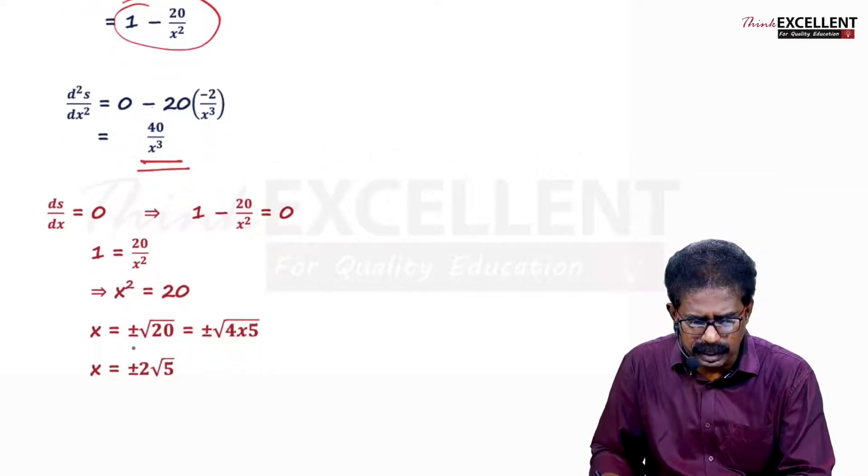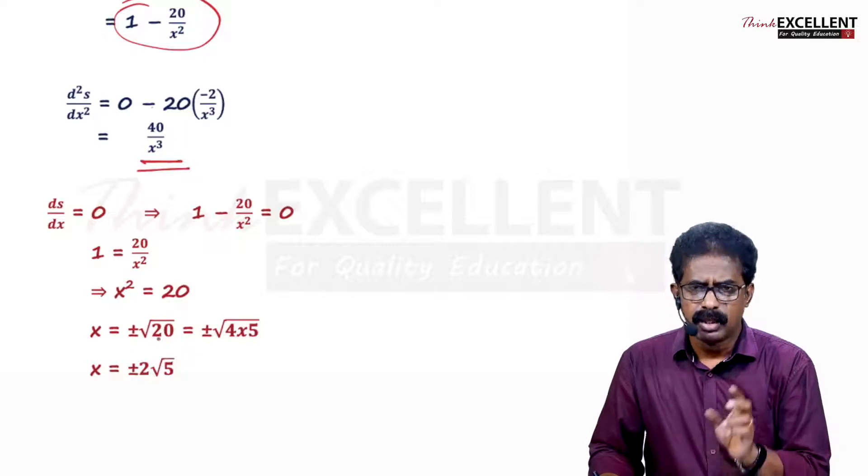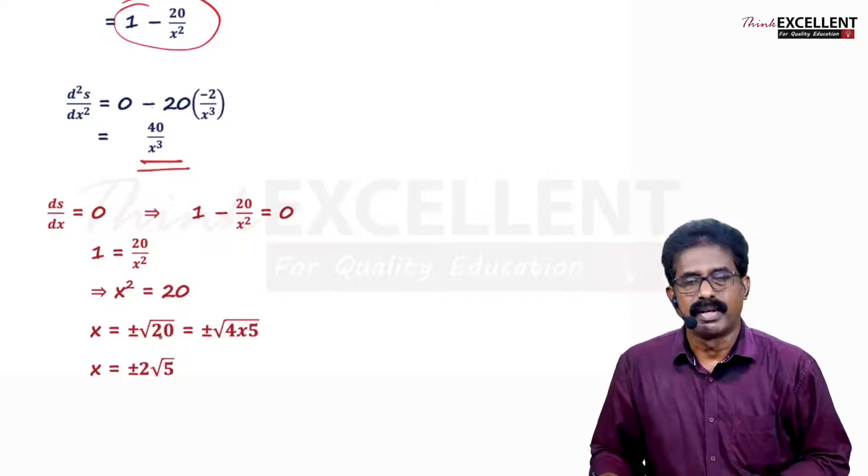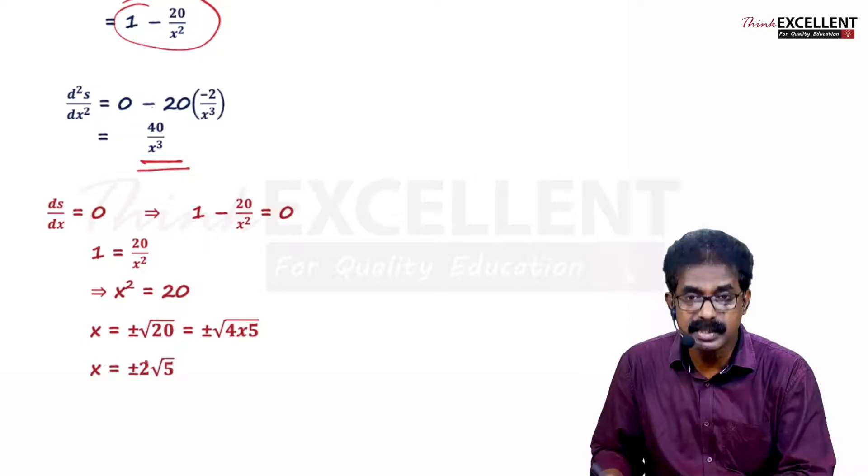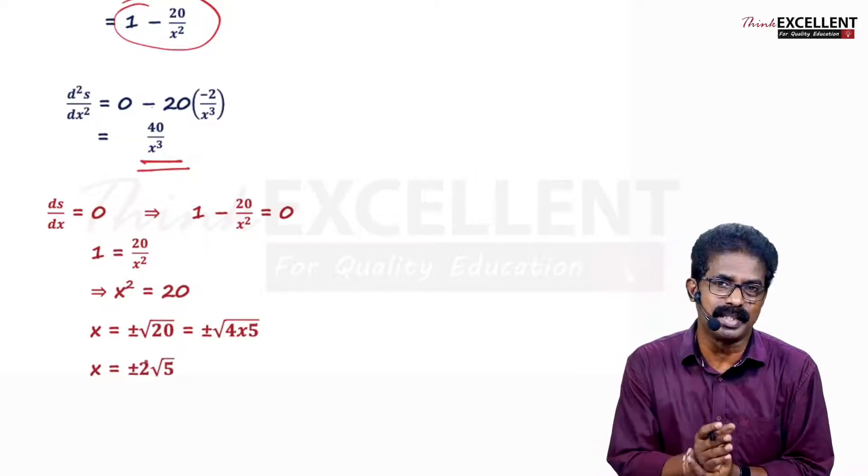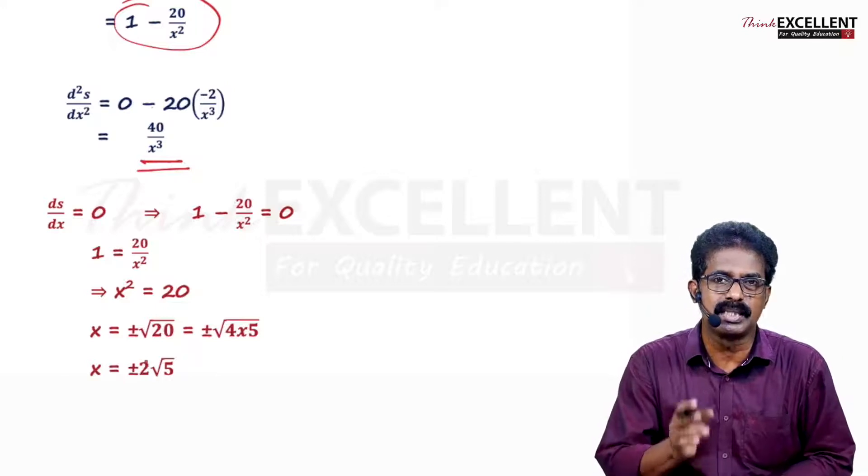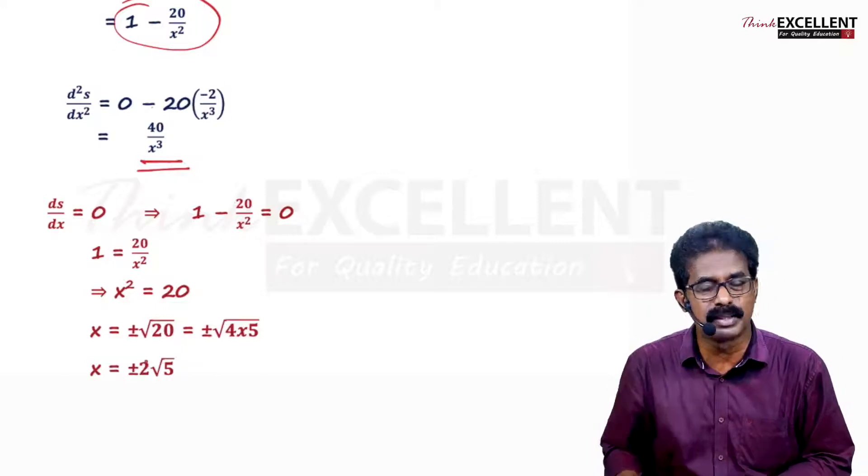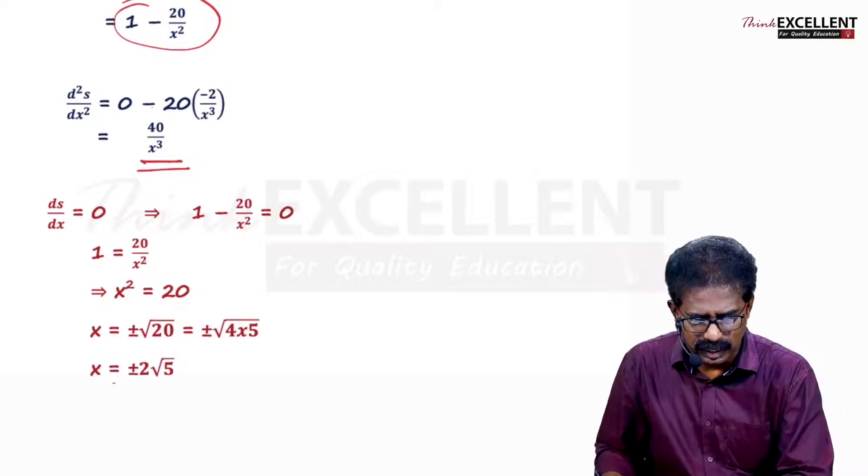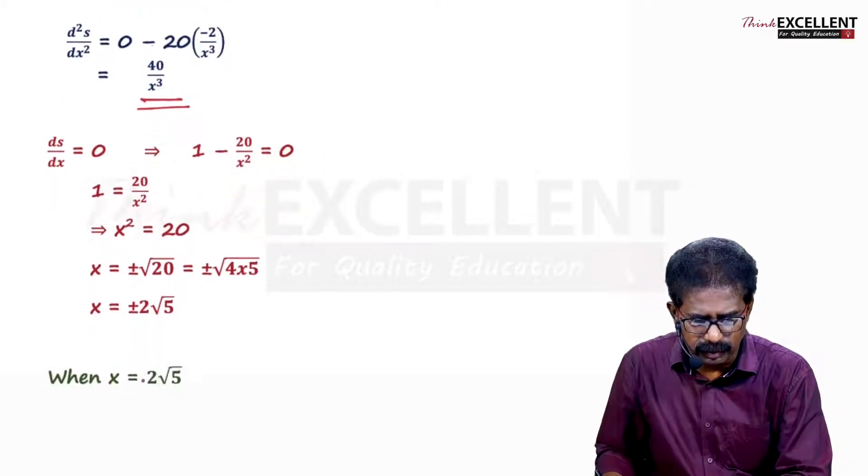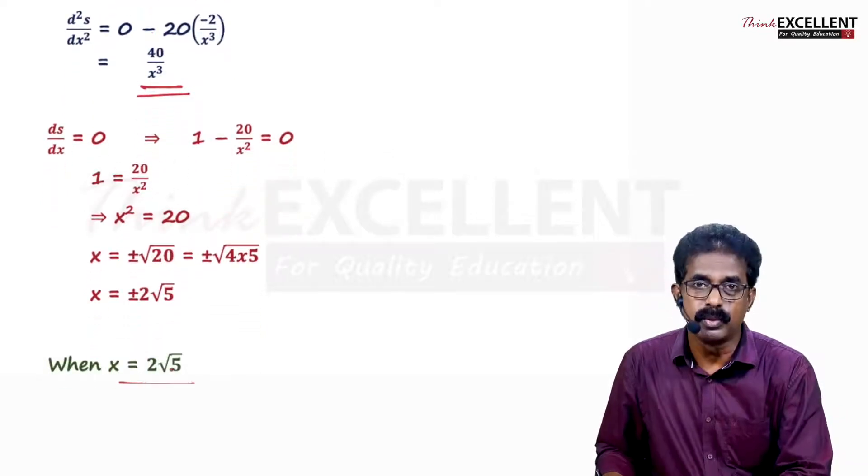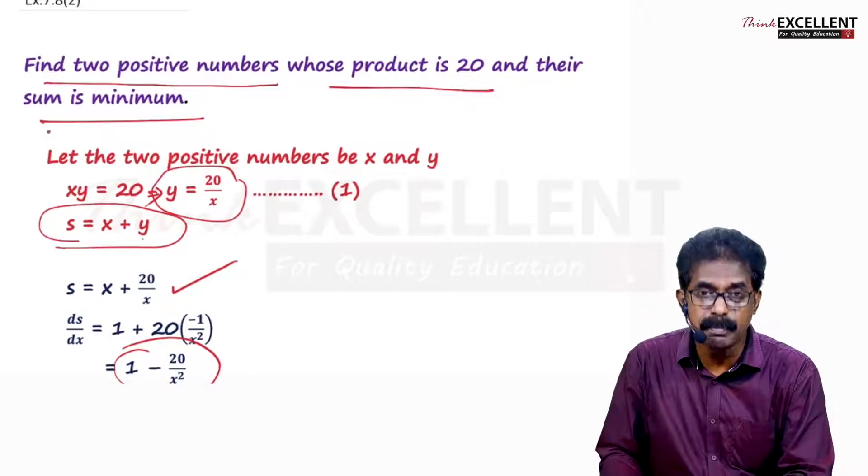x equals plus or minus root 20. 20 can be written as 4 into 5. Root 4 is 2, so 2 root 5, plus or minus. But I have given a hint. Actually you are getting two points, no need to put both. Because the question says find two positive numbers, so take only the positive value. x equals 2 root 5. Don't take that as a final answer.